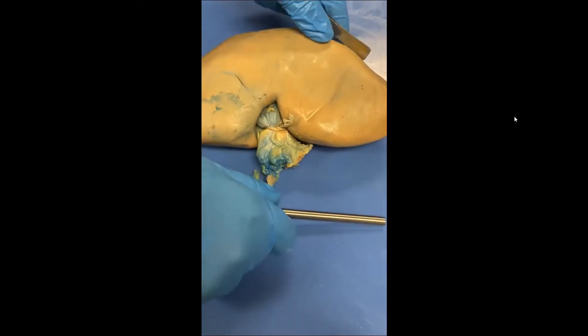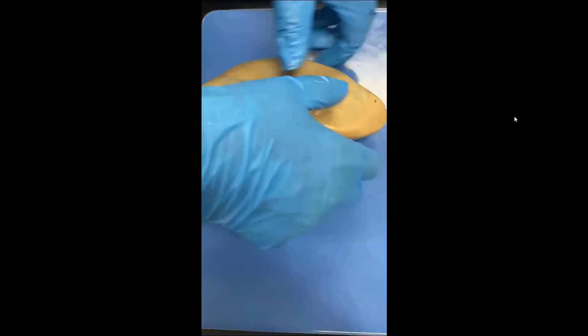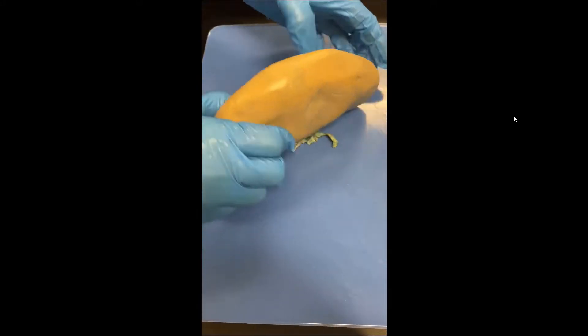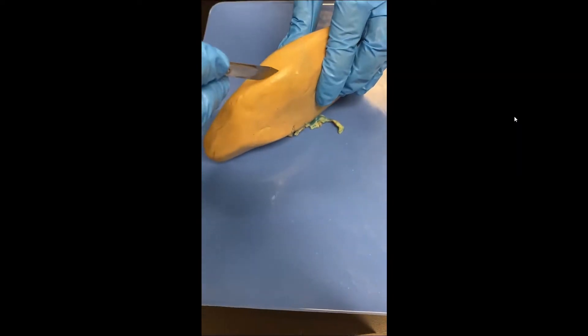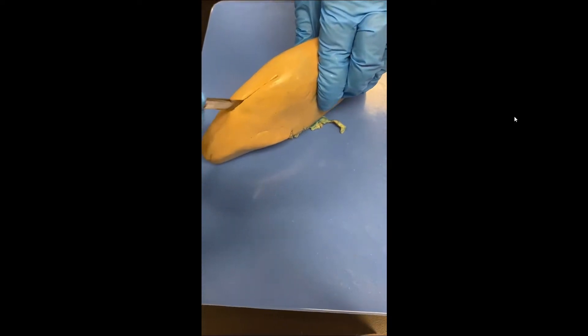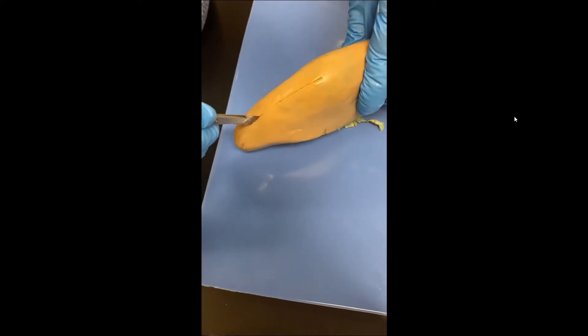We're going to do a coronal cut. So be really careful on this. It's helpful to cut just slightly off a midline if you can figure out where a midline is. So be very careful with your knife. Again, always cut away from your fingers. And we're going to do a coronal cut.